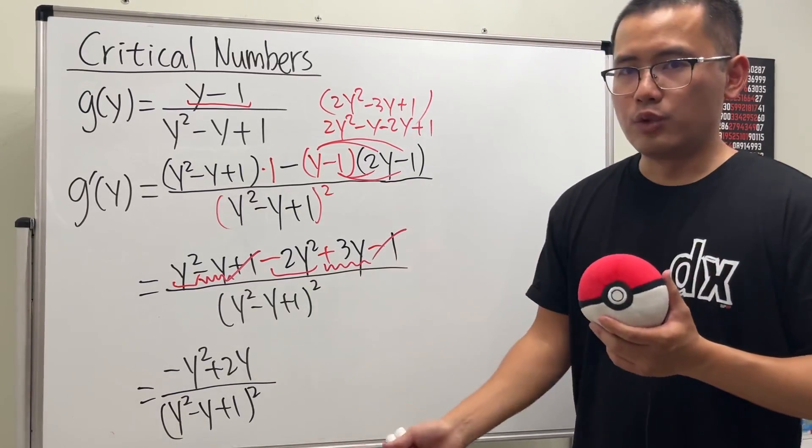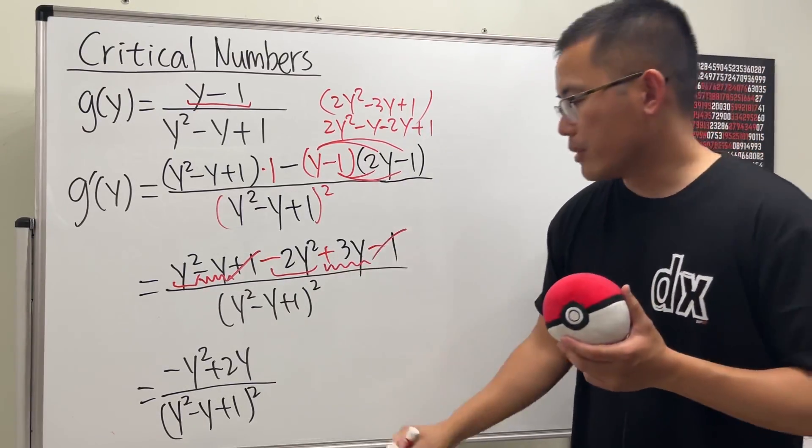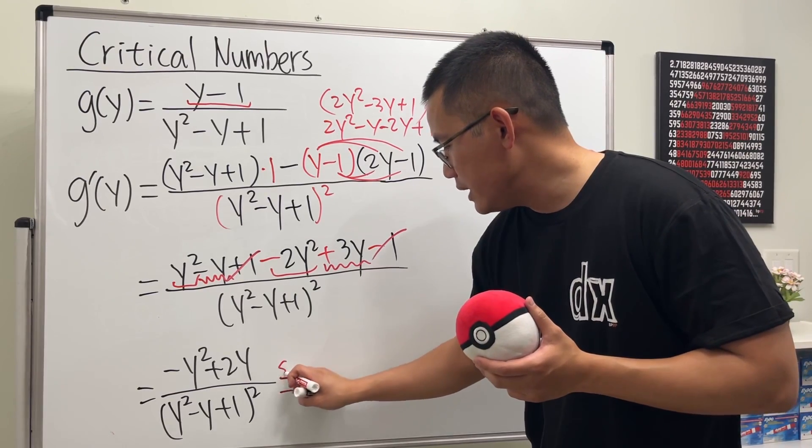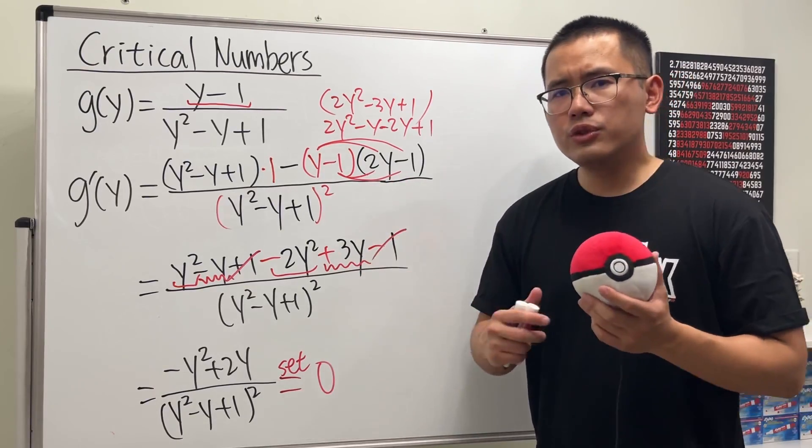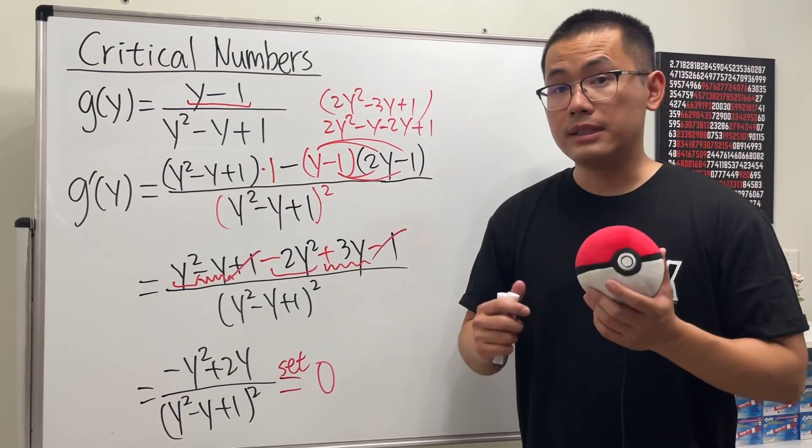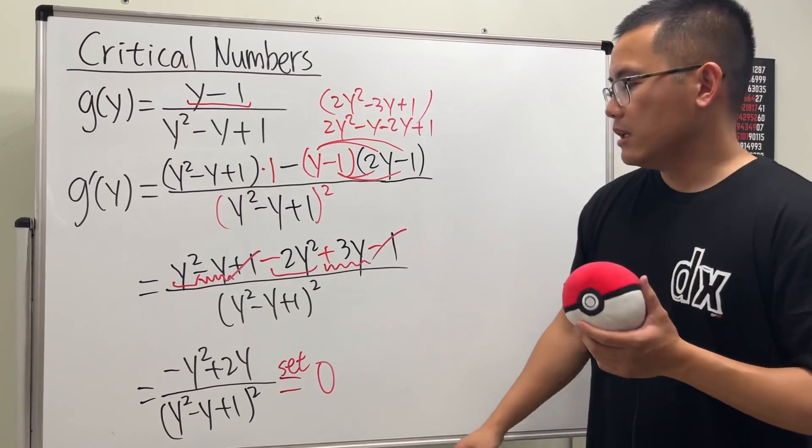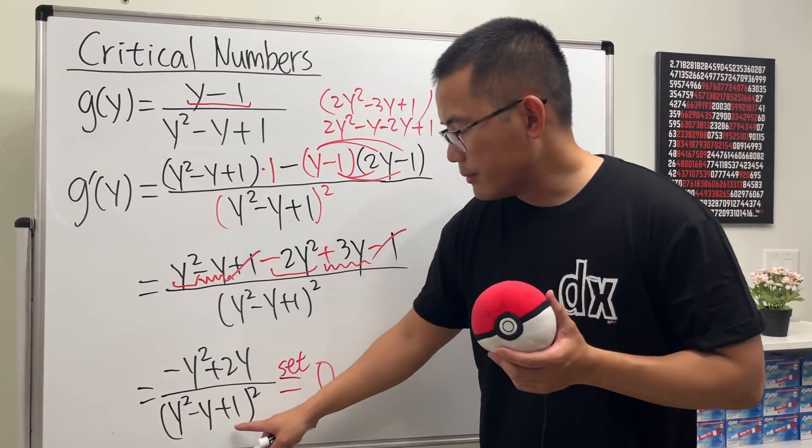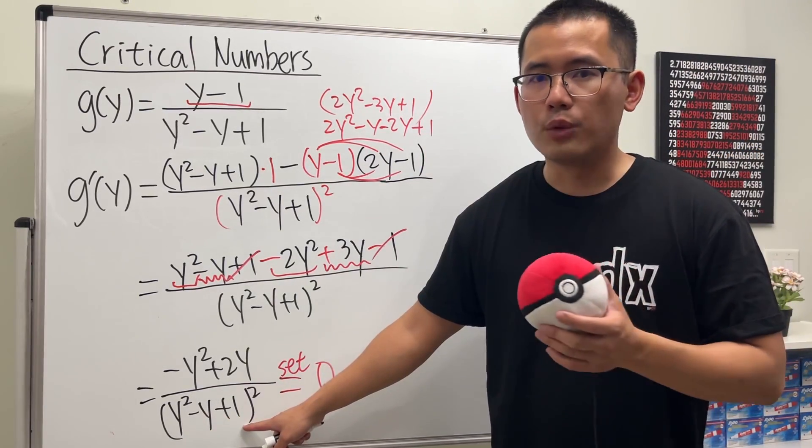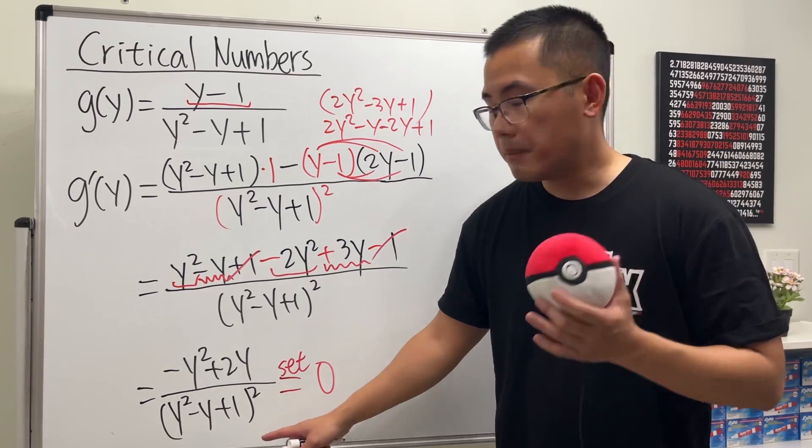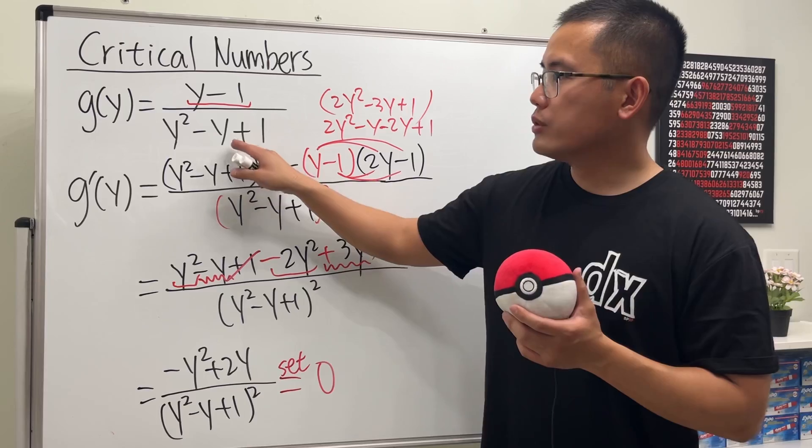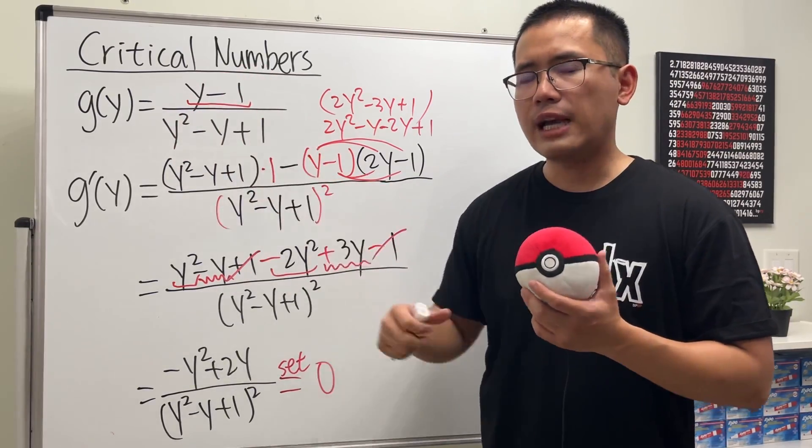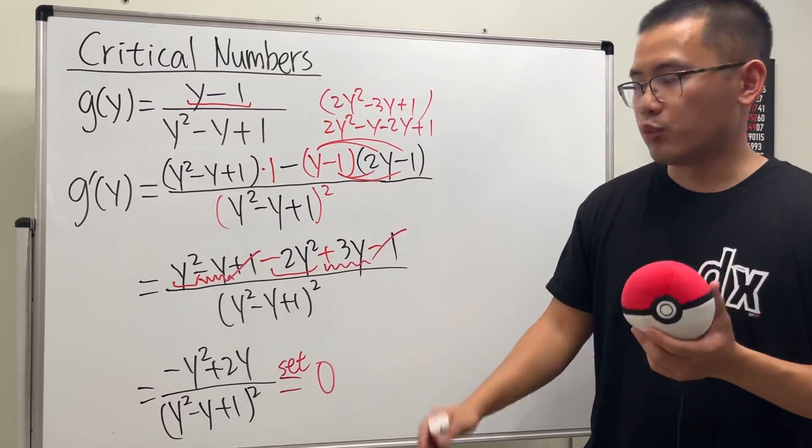This is just the derivative. And now for the critical number, we are going to set this to be equal to 0. And the truth is, in this case, we also should look at where the derivative is undefined. But the thing is that, if you set the bottom to be 0, that will be where the derivative is undefined. But once you do that, you will see that that will also make the original function 0. So it's actually not on our domain. So you don't have to worry about that.